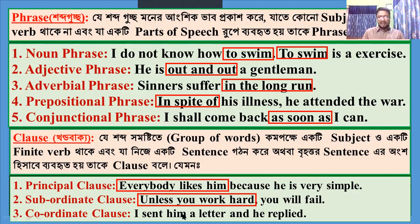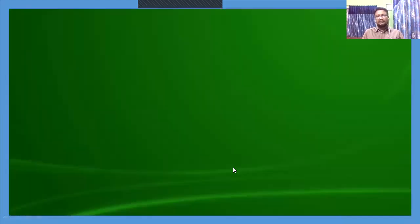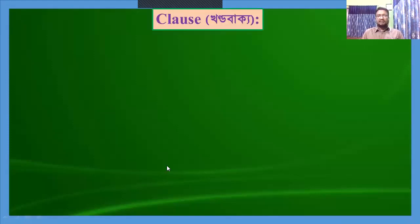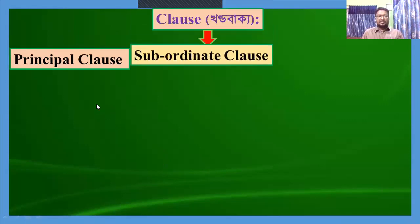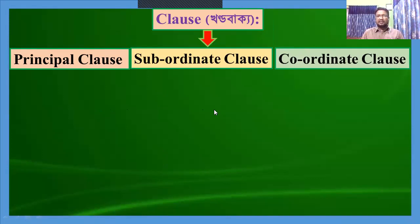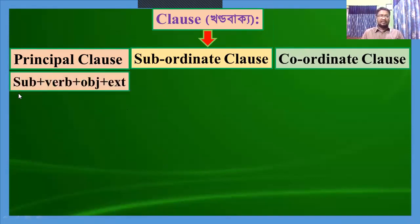Co-ordinate clause: 'I sent him a letter and he replied.' Here, 'I sent him a letter' is a principal clause, and 'he replied' is also a principal clause. They are connected with 'and', so it is a co-ordinate clause. Summary: In a principal clause, there is subject, verb, object, and extension, with nothing before the subject.